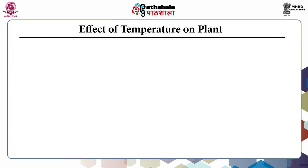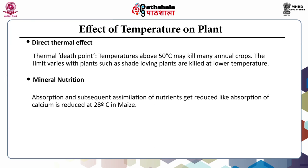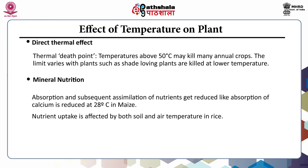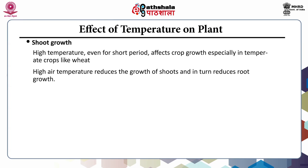High temperature has several effects on plants. It has a direct thermal effect — the thermal death point is a temperature above 50°C, which may kill many annual crops, with shade-loving plants killed at lower temperatures. It also affects mineral nutrition: absorption and assimilation of nutrients get reduced, such as calcium absorption being reduced at 28°C in maize, and nitrate reductase activity decreases under high temperature. Even for short periods, high air temperature reduces shoot growth and in turn reduces root growth, especially in temperate crops like wheat.